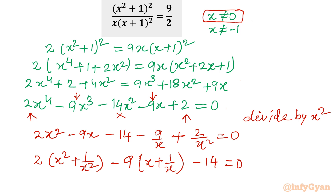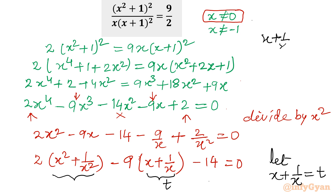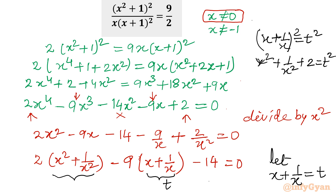Now I will apply the substitution: let x + 1/x equal t. Squaring both sides of x + 1/x = t gives x² + 1/x² + 2 = t², so x² + 1/x² equals t² minus 2.